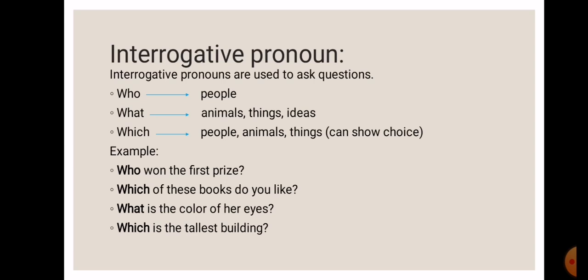For example, which of these books do you like? So they are asking you to choose between the two. Which is the tallest building? Here they are trying to pinpoint, they are trying to be specific. Who won the first prize? They want you to name the person who won the first prize. That's an interrogative pronoun. Similarly for what: What is the colour of her eyes? They want you to name the colour, the specific colour.